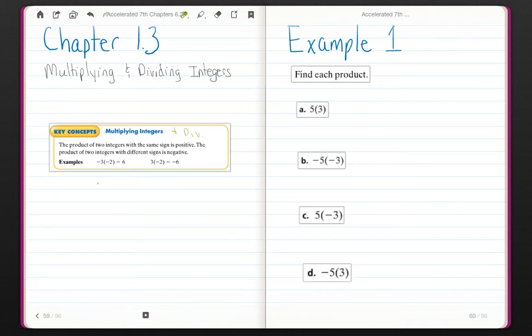So you will notice that your book is starting to use parentheses to note multiplication. Negative 3, parentheses, negative 2. These parentheses right next to a number means to multiply.